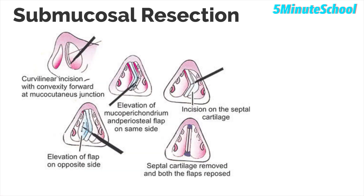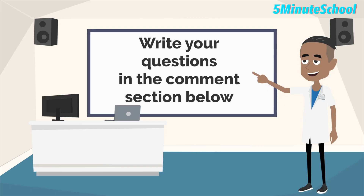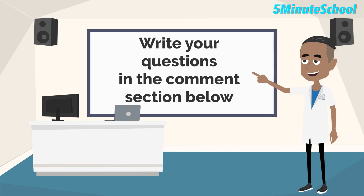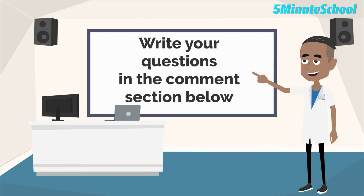In more severe cases, a submucosal resection is performed under anaesthetic. This involves separating the nasal cartilage from its lining — the mucoperichondrium — removing the deviated portion, stitching the lining back together, and placing a splint to help retain the shape. That's all for today's video on deviated nasal septum. If you have any questions relating to septal deviation, feel free to comment and I'll do my best to get back to you.